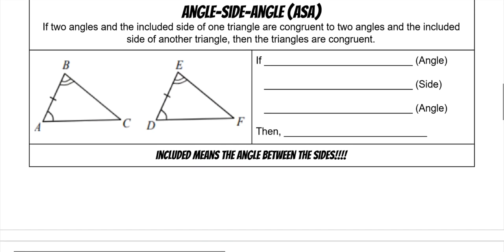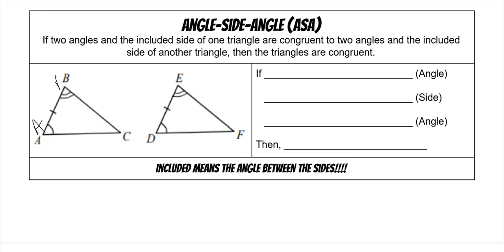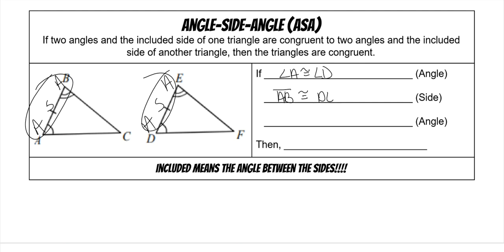Then we have angle-side-angle. You have two angles and the side between on one triangle that are the same as two angles and the side between on the other triangle. As long as that's true for both triangles, those triangles will be congruent by angle-side-angle. So angle A is congruent to angle D, the side between those angles is AB and DE, and then the other angles are angle B and angle E. That means the triangles are congruent.